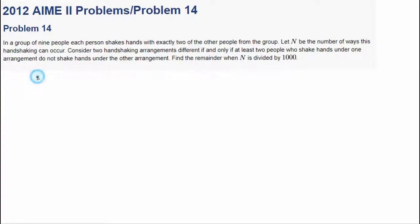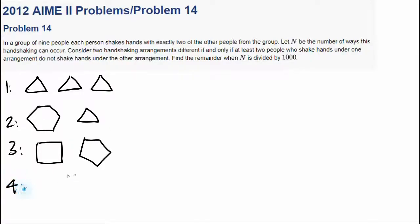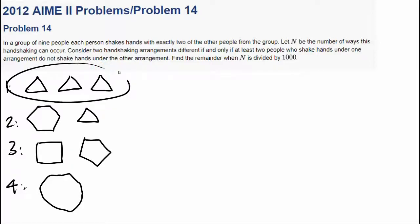So how many ways can we make rings from nine people? There are exactly four ways. The first way is having three rings of three. The second way is having one ring of six and one ring of three. The third way is having one ring of four and one ring of five. And the fourth way is having one huge ring of nine. So let's calculate the number of ways for each of these four cases.